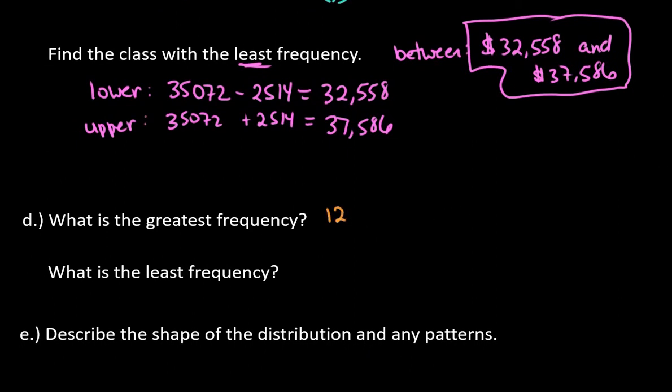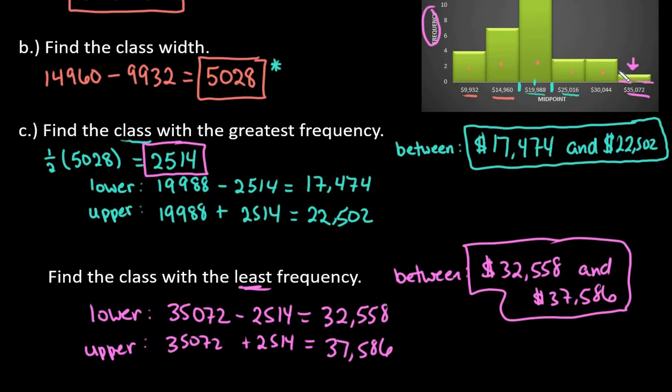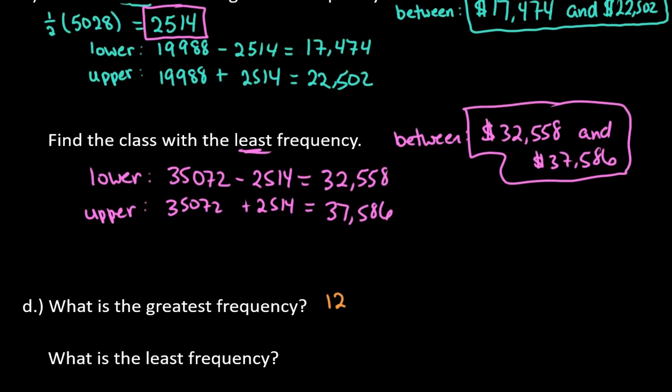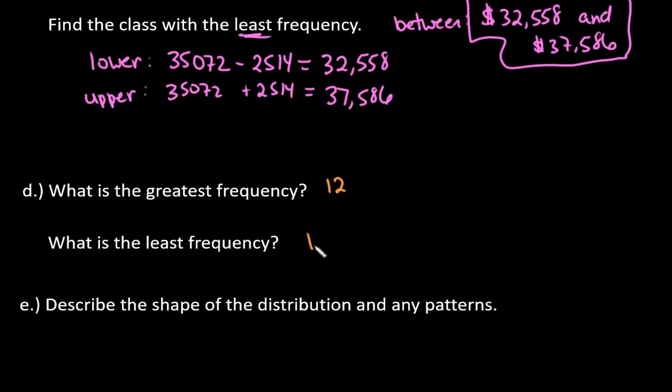The least frequency, we would just go to the shortest one, which we already did here. We would come across to this part here, and we can see it's halfway between 0 and 2. So we can say our least frequency is 1. We only had one college that fell between these values from this sample.